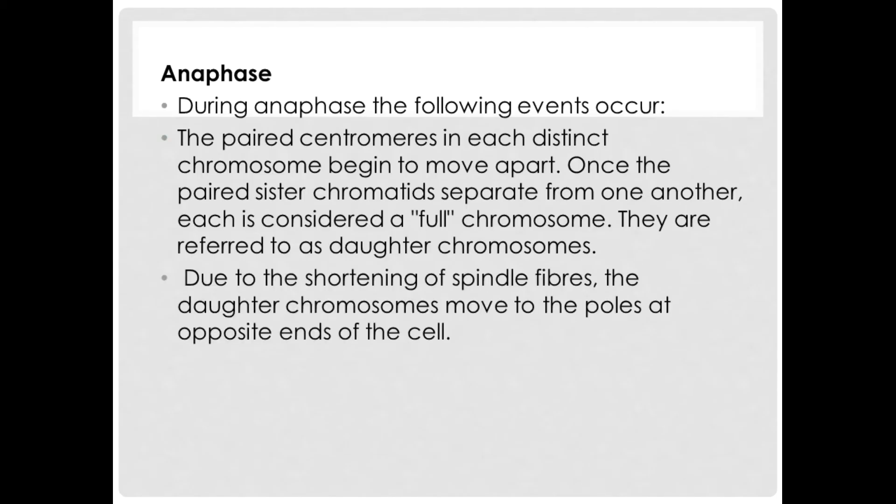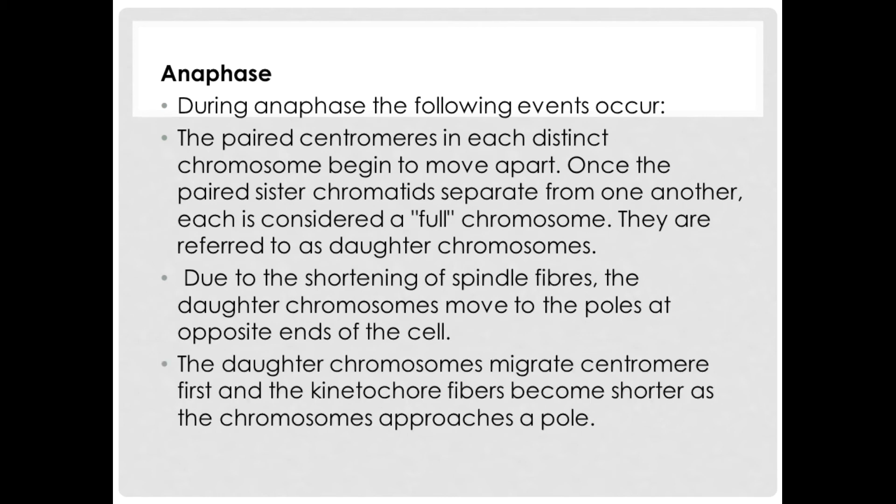Due to the shortening of spindle fibers, the daughter chromosomes move to the poles at opposite ends of the cell. The daughter chromosomes migrate centromere first and the kinetochore fibers become shorter as the chromosomes approach a pole.